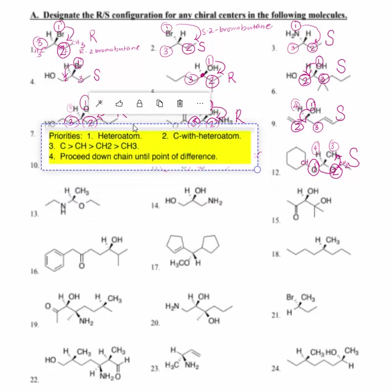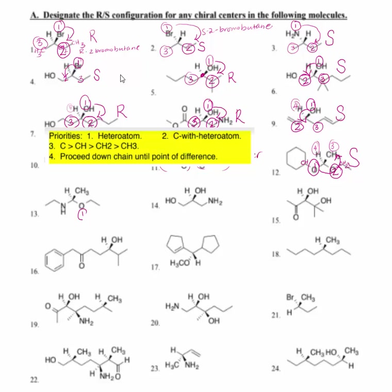For number thirteen, we have an N and an O — both heteroatoms. We need to go with the heavier heteroatom for number one, so oxygen is going to be number one. That makes nitrogen number two, and methyl number three. Hydrogen is pushed to the rear. This is clockwise, so this is an R. For number fourteen, oxygen is number one and I have two carbons with heteroatoms. We go to the heavier heteroatom for higher priority. This one is number two and this one is number three. This rotates counterclockwise, so this is an S configuration.